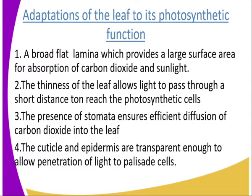There are several adaptations of the leaf to its photosynthetic function — these adaptations enable the leaf to carry out photosynthesis. The first adaptation is that the leaf has got a broad, flat lamina, which provides a large surface area for absorption of carbon dioxide and sunlight.